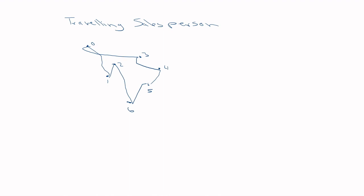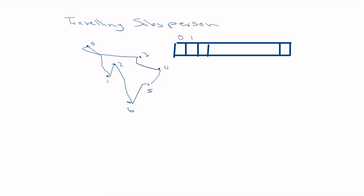You want to know the optimal order to visit the cities. This problem lends itself very well to an array representation. Since there are a fixed number of cities — say seven — you represent the solution as an array where the position zero contains the starting city, and each subsequent position contains the next city to visit.